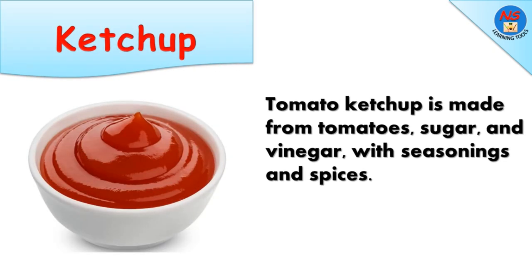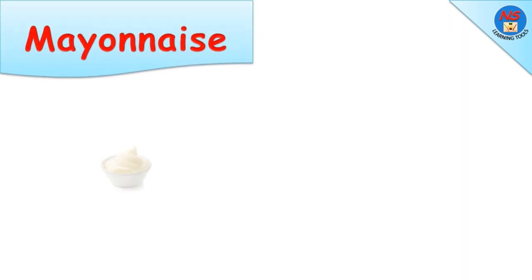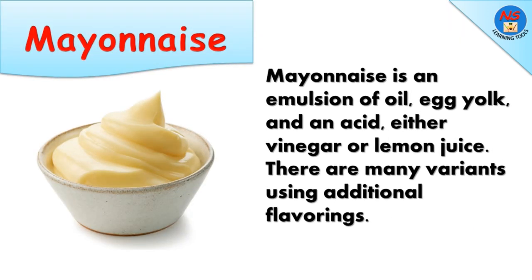Tomato ketchup is made from tomatoes, sugar, and vinegar with seasonings and spices. Mayonnaise is an emulsion of oil, egg yolk, and an acid — either vinegar or lemon juice — with many variants using additional flavorings.